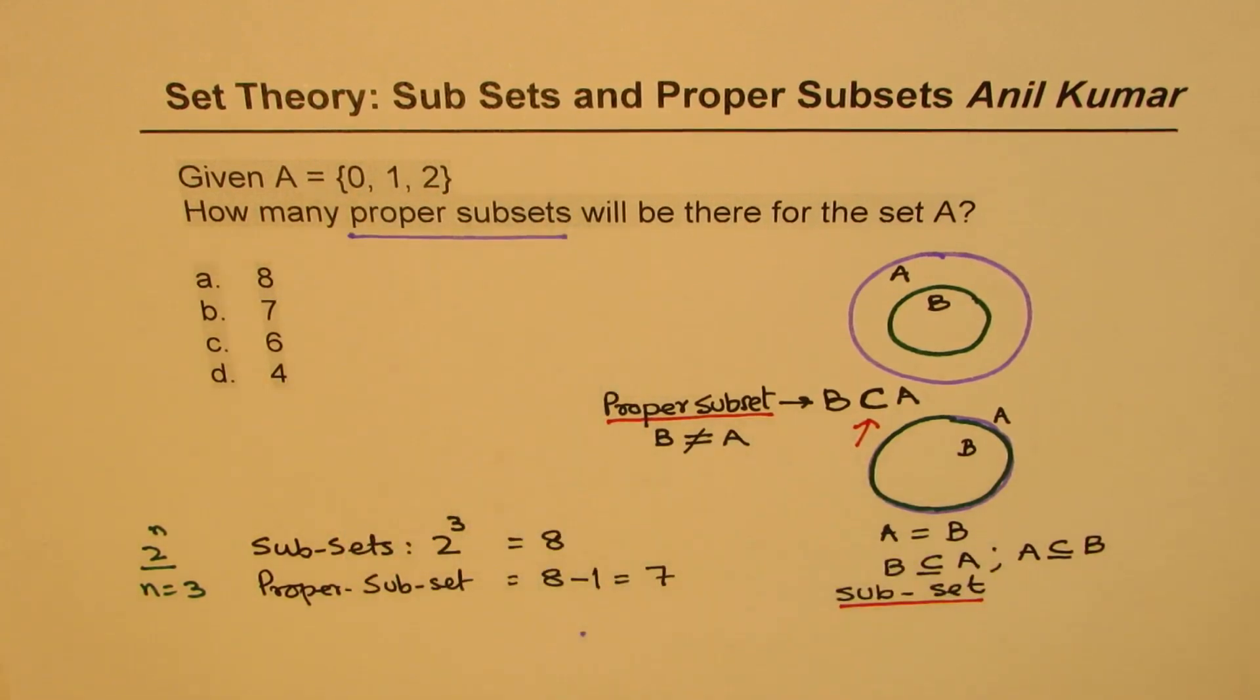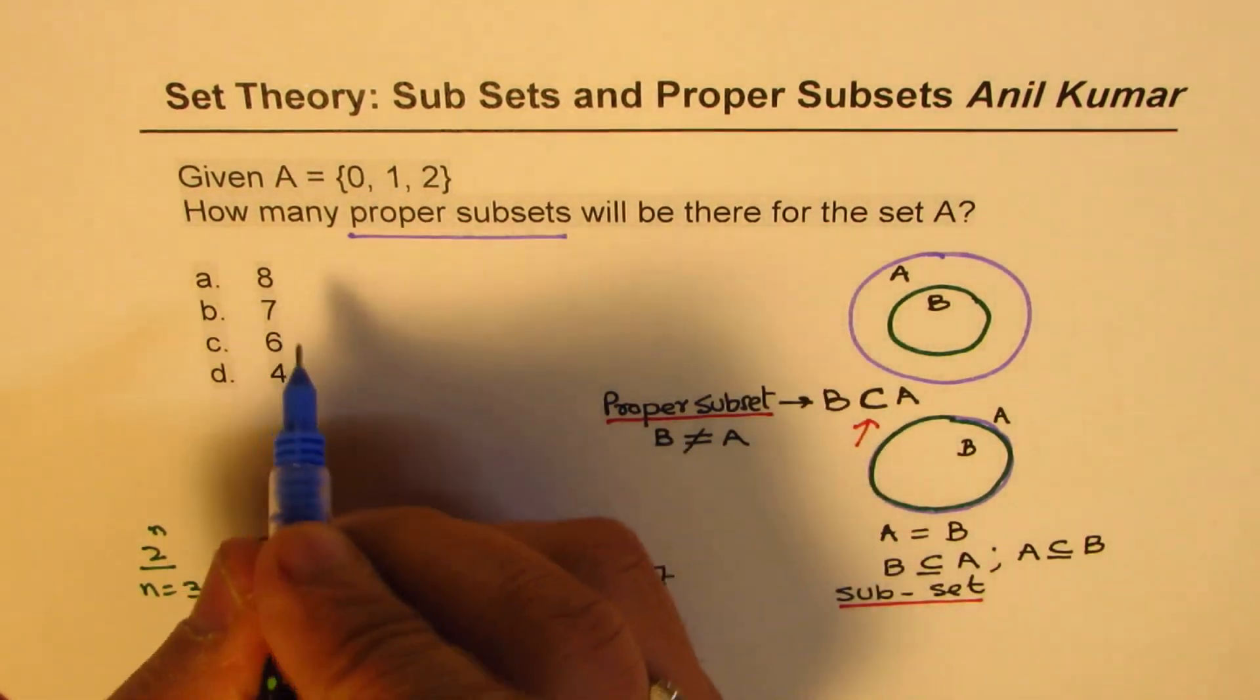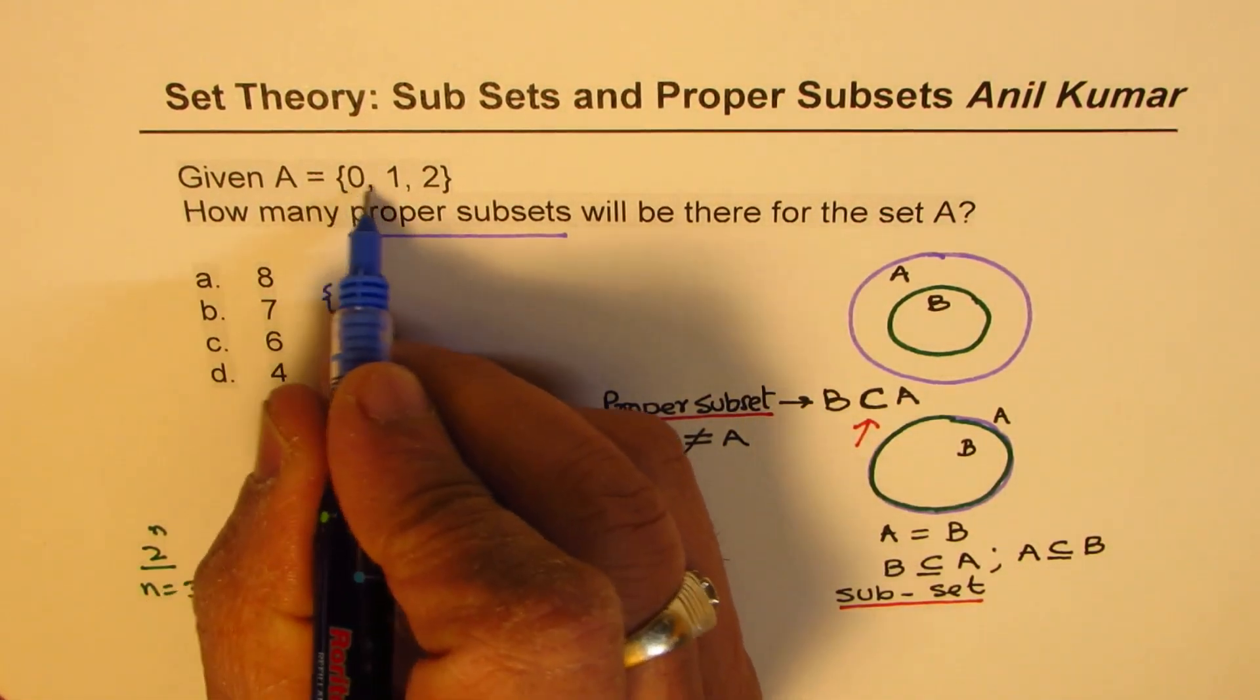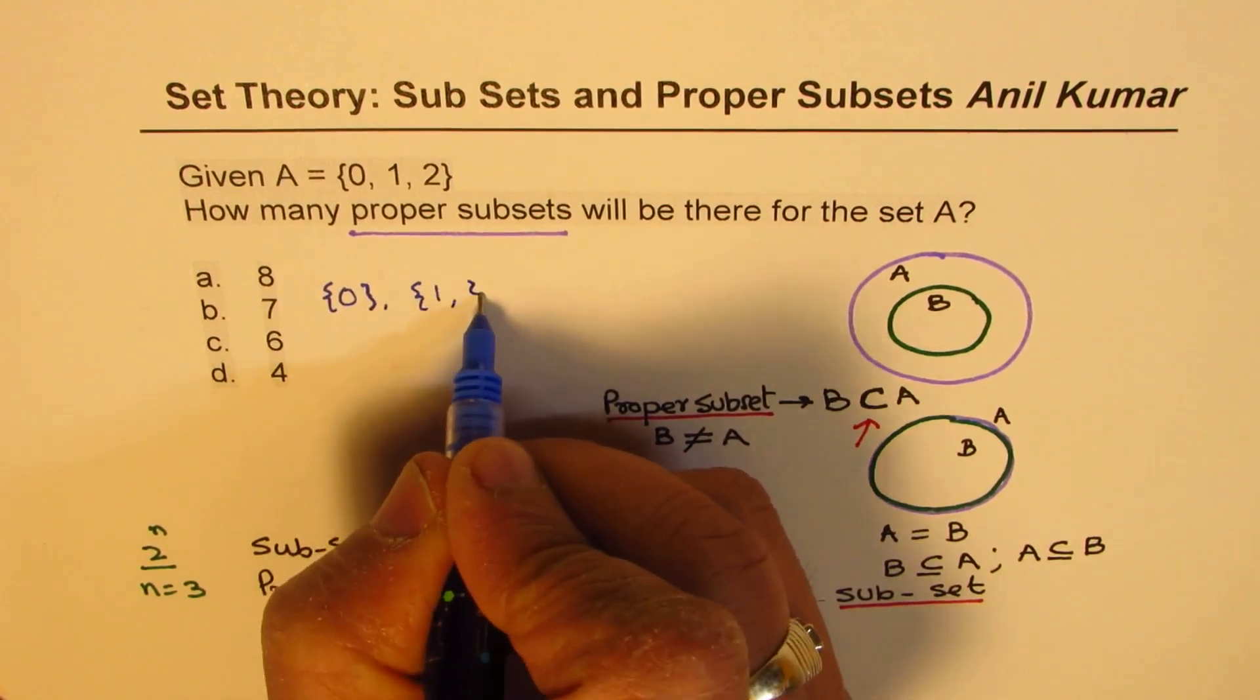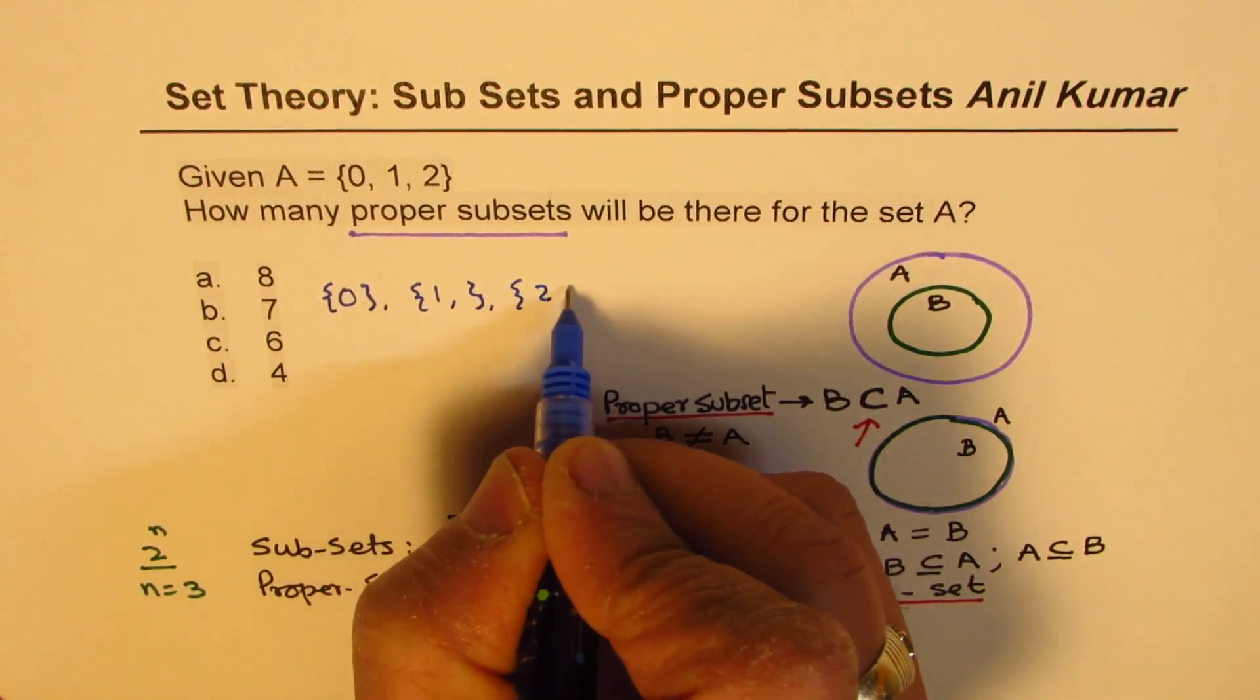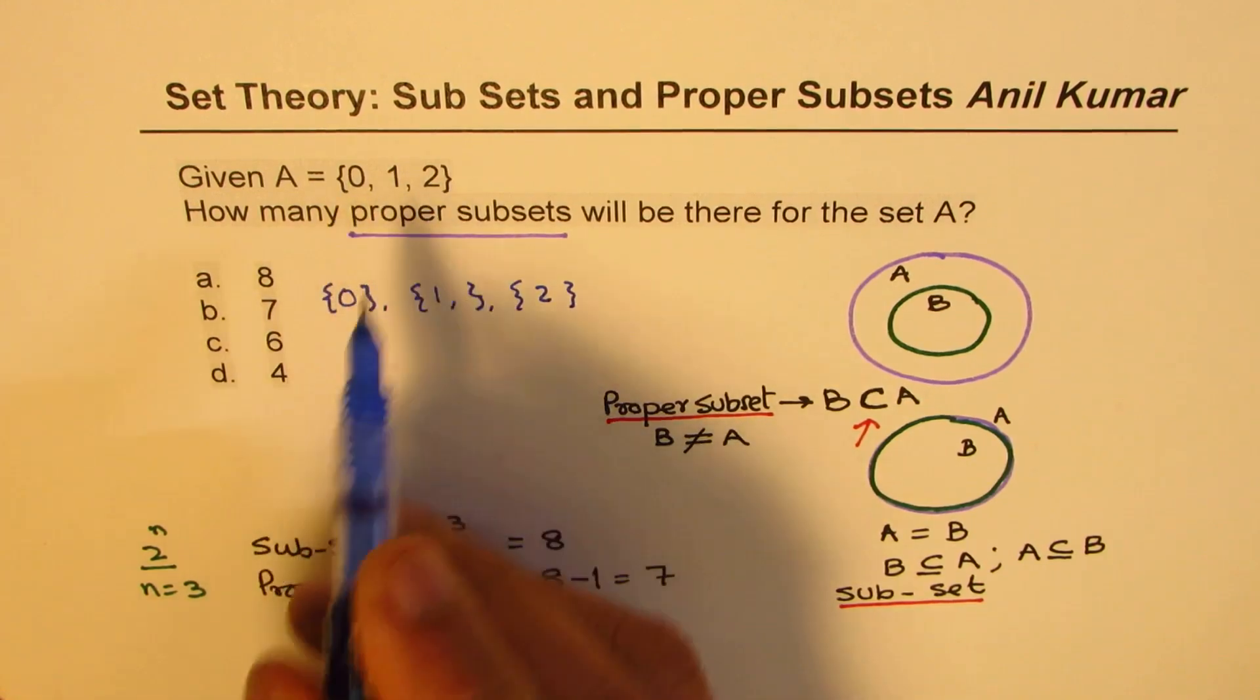Or we could list out these sets also. Now let me list out these sets. So one of the sets here is with single element, so it could be {0}, {1}, or {2}. In one we could have combination of any two, so with zero we could have one, with zero we could have two.